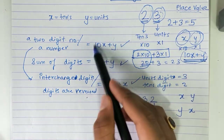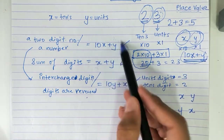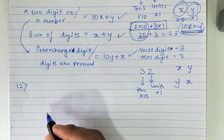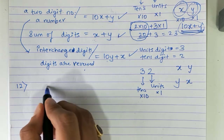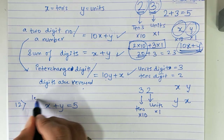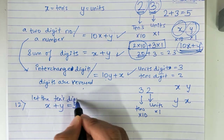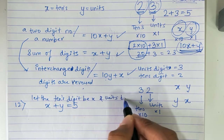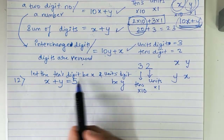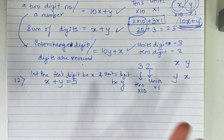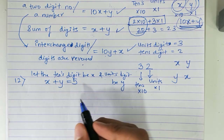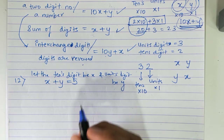This is the value of the number. Let's see question number 12: 'Sum of the digits of a two-digit number is 5.' For every sum, you begin by writing: let the tens digit be x and the units digit be y. Since the sum of digits is 5, we get x plus y equals 5.